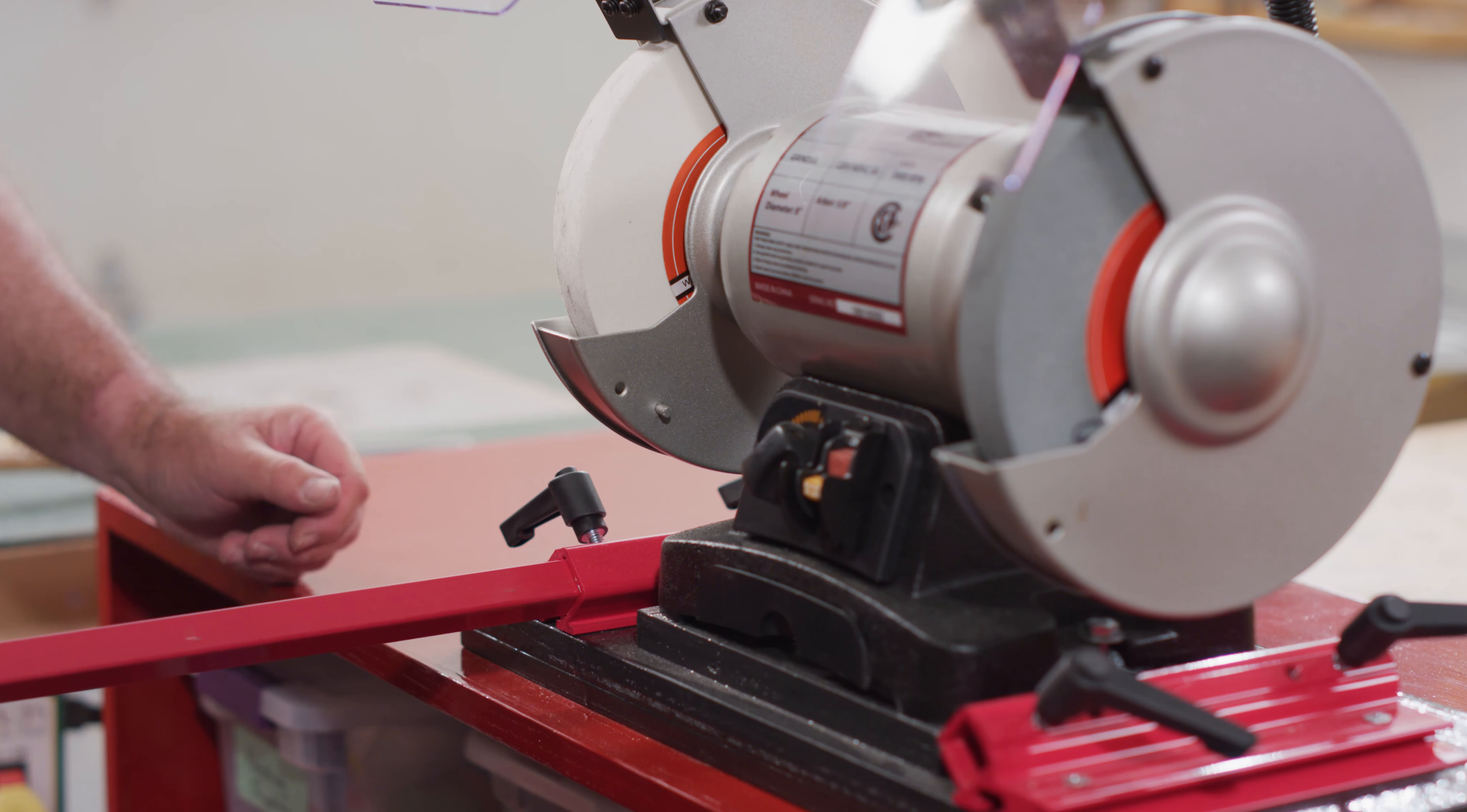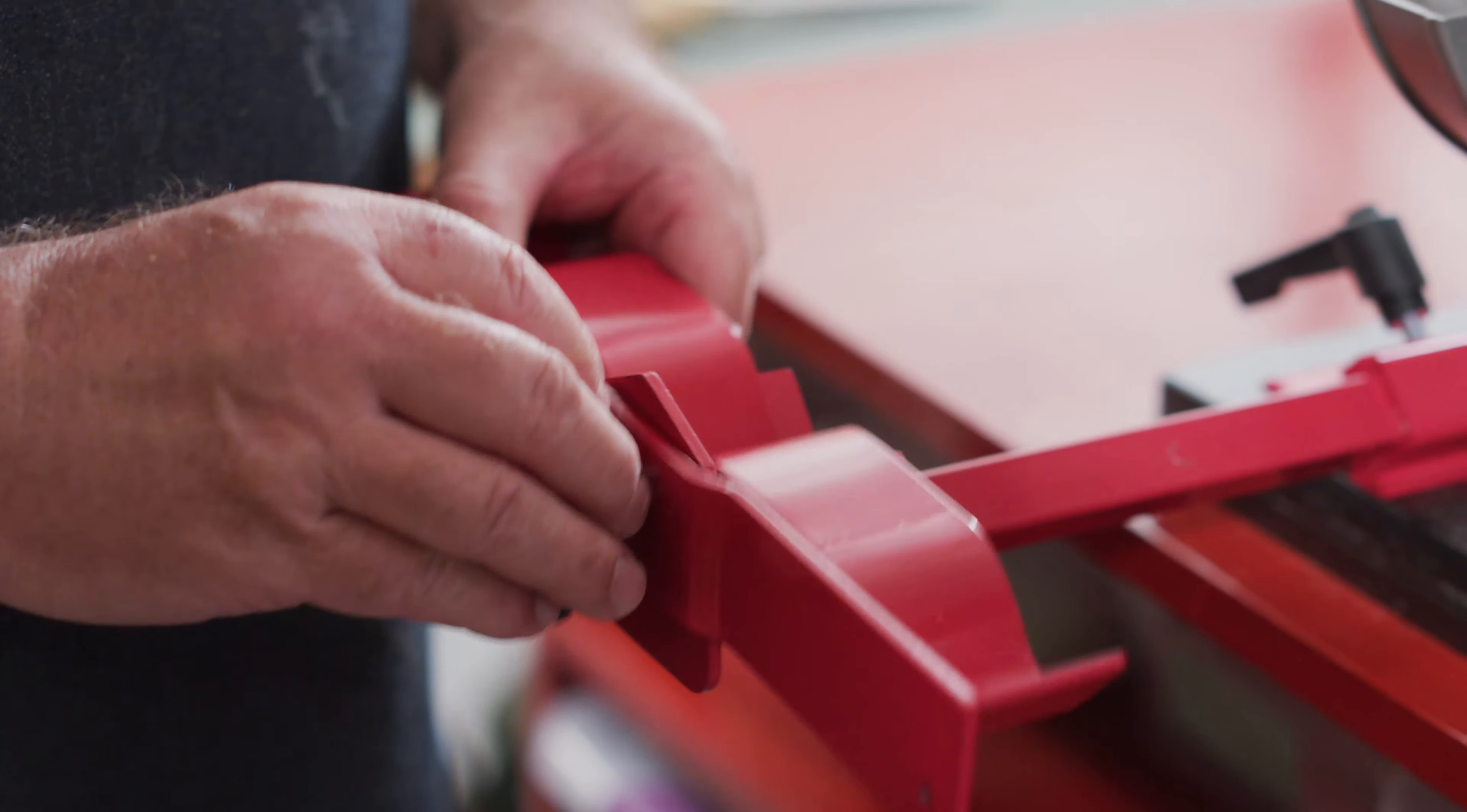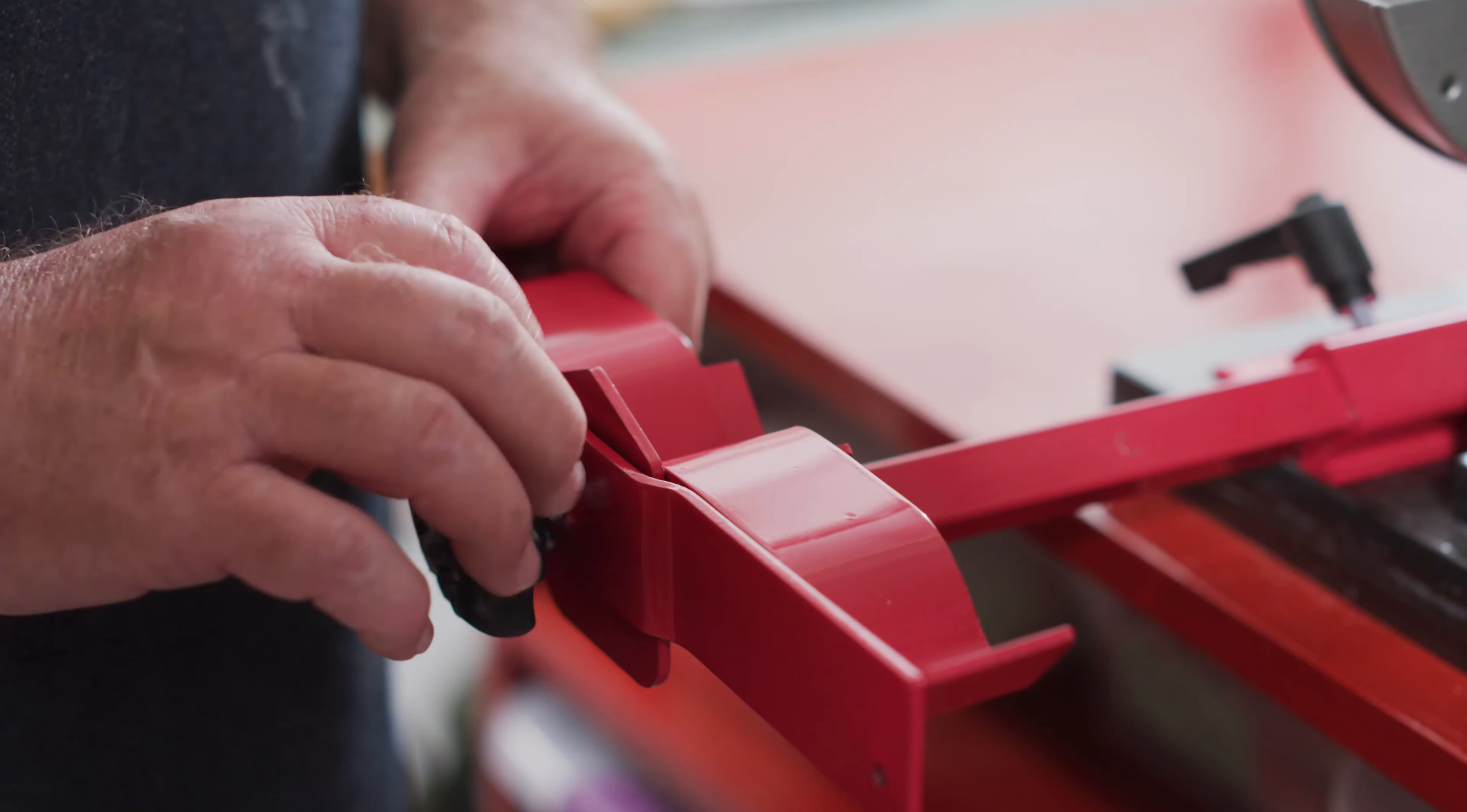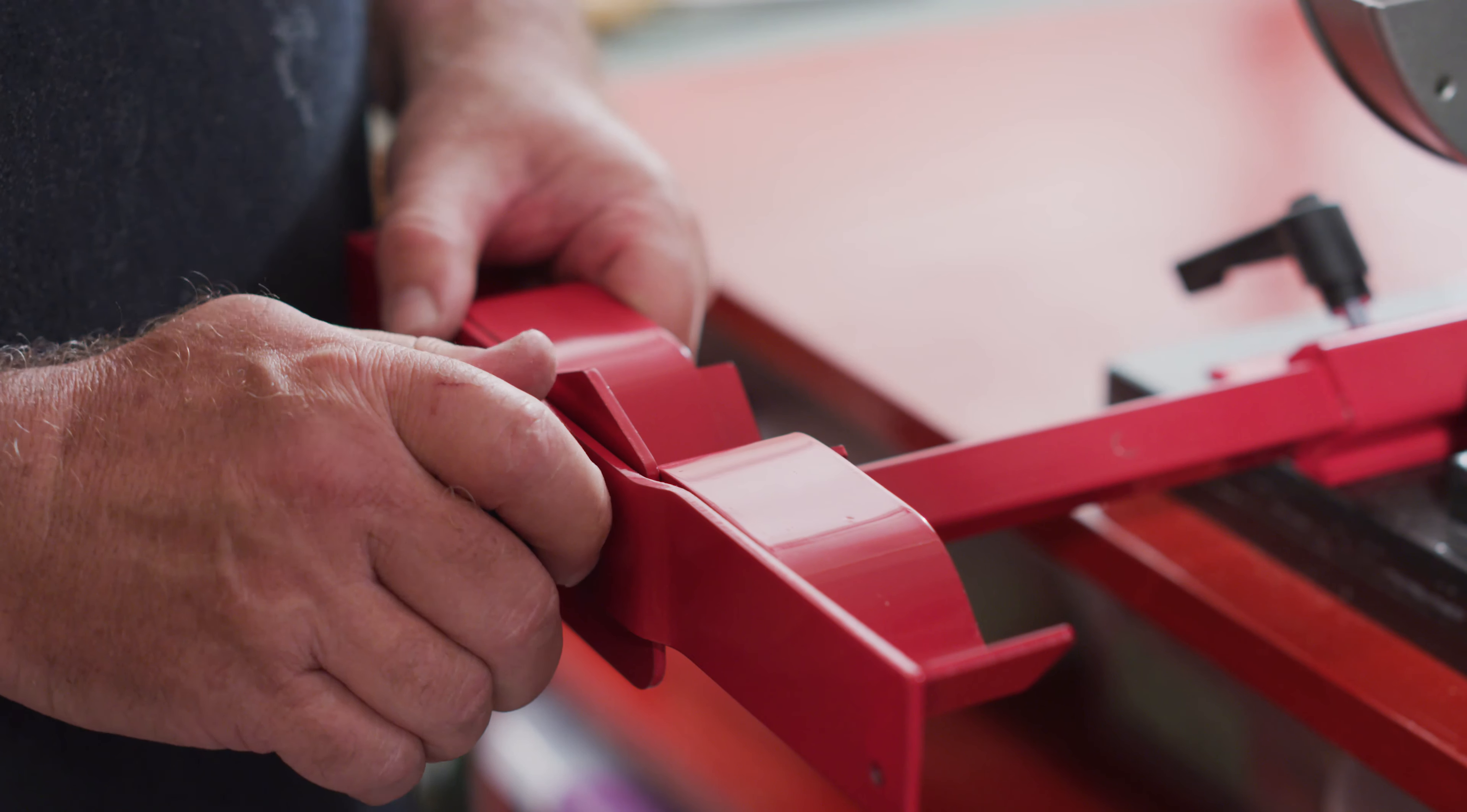Insert one end of the V pocket jig extension arm into the base. Slip the skew grinding jig attachment on the end of the extension arm and secure it in place with the screw knob.